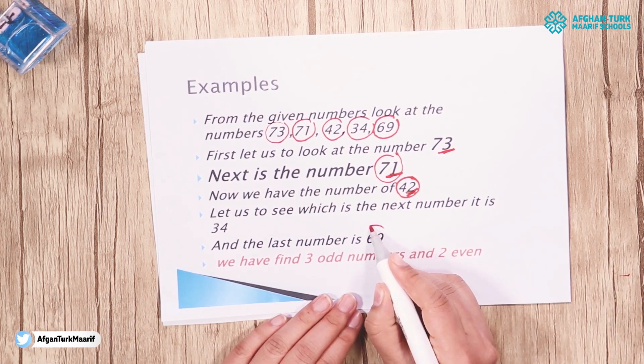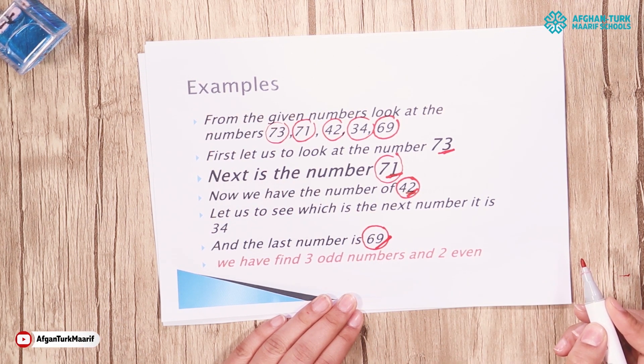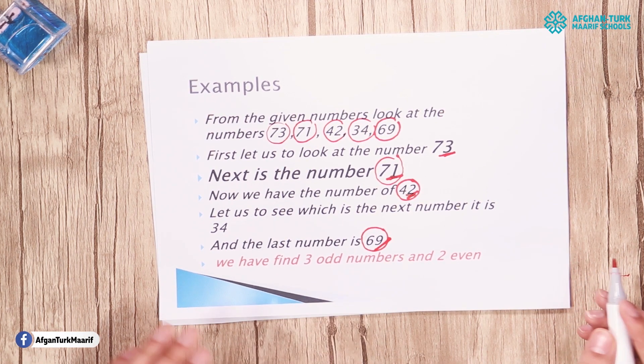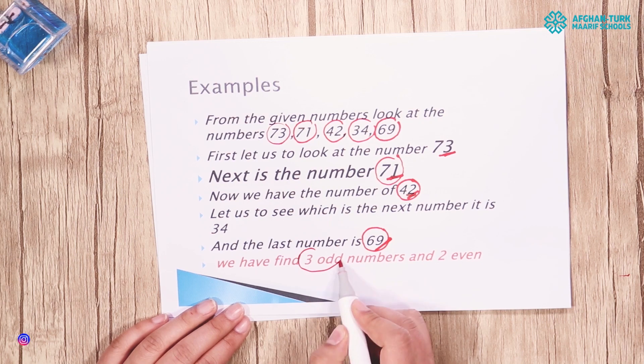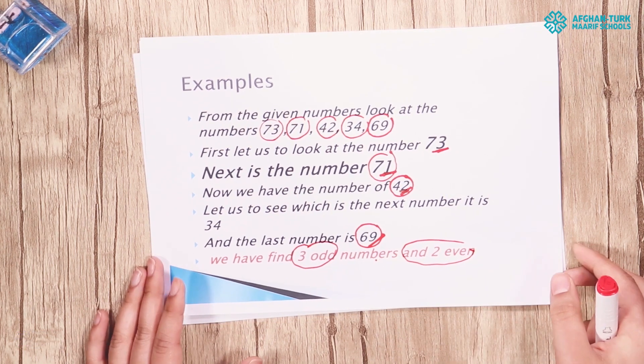The number 69 has 9 in ones place so we can say that the number 69 is an odd number. We have found 3 odd numbers and 2 even numbers from the given examples.